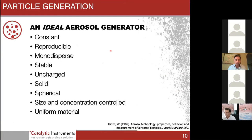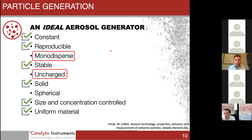Coming back to the particle generation slide, we have constant to a point, reproducible to a point, stable, solid, size and concentration controlled, and uniform material because we're using silver. We're ticking off a few of these ideal aerosol generator points. This leaves us with monodisperse, uncharged, and spherical. Let's look at these in more detail.